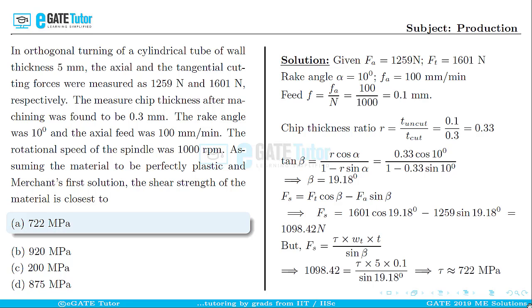The next step is to calculate the shear strength using the expression: Fs = tau × wt × t / sin(beta), where tau is the shear strength to be calculated, wt is the wall thickness = 5 mm, t is the uncut chip thickness = 0.1 mm, and beta is the shear plane angle. With Fs = 1098.42 newton, substituting all values and simplifying gives the shear strength tau = 722 megapascals.